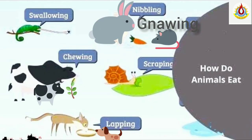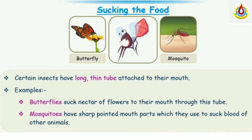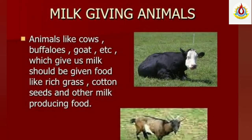How do animals eat? Some bite the flesh, some chew the cud, some swallow the food, some nibble or gnaw, and few animals lap the milk or water. Certain insects have a long, thin tube attached to their mouth. For example, a butterfly sucks nectar from flowers through this tube.